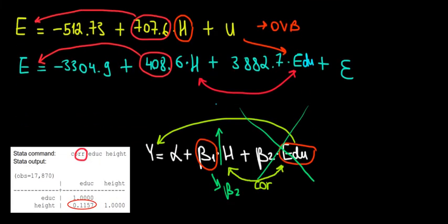So meaning that yes, there is an actual effect of this omitted variable on the outcome. Let me just draw it like that. There is an actual effect of education on our outcome and there is also a positive correlation.